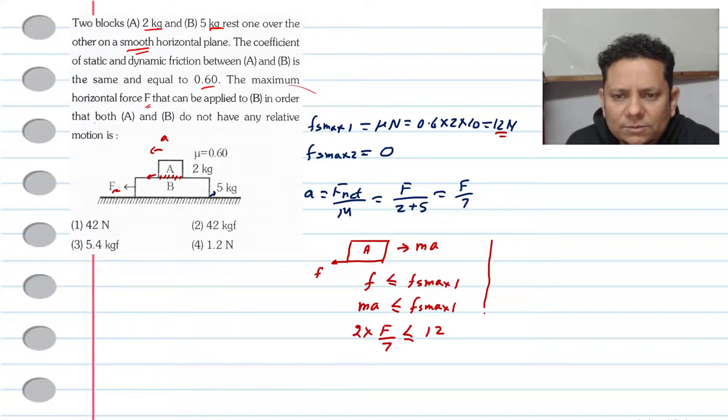So F should be less than or equal to 12 multiplied by 7 divided by 2. This equals 42 N. Your two cancels, 12 to 6, 7 to 42 N. This is the maximum force value.